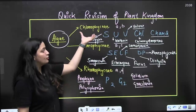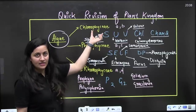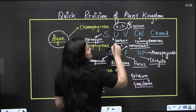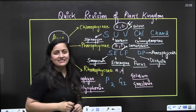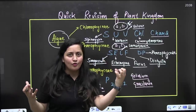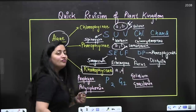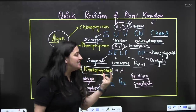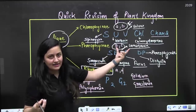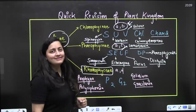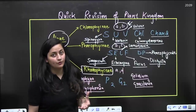In algae we study Chlorophyta, Phaeophyta, and Rhodophyta. Chlorophyta is green algae — like higher plants, it has chlorophyll a and b. Phaeophyta is brown algae — it has chlorophyll a and c. Rhodophyta is red algae — it has chlorophyll a and d. Brown algae is brown because of fucoxanthin; red algae is red because of phycoerythrin.